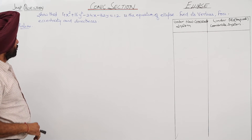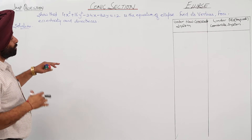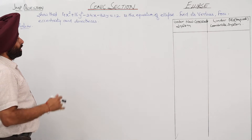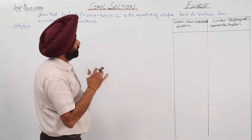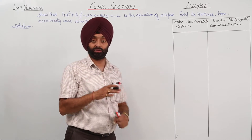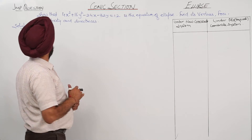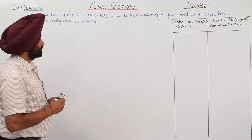In this question, we have to show the given equation represents an ellipse or not, and if it represents an ellipse then we have to find its vertices, foci, eccentricity, and directrices.